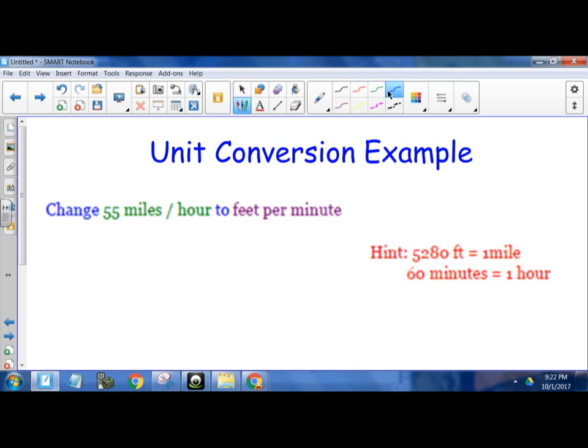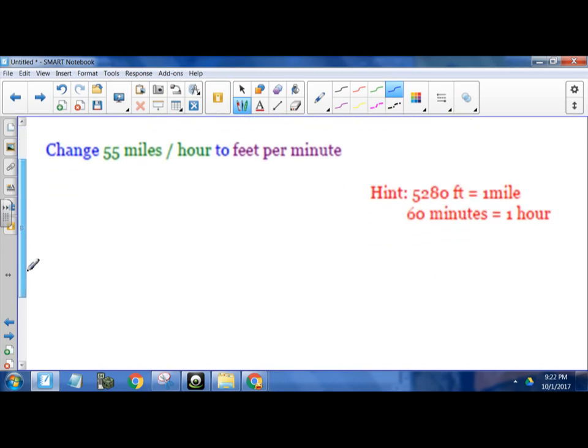So let's try. The first step is to always set up the problem as a ratio. So 55 miles over 1 hour. So we have to change two things here. We have to change miles to feet and we have to change hours to minutes. So we have what we call a double conversion here. So you pick one and start with that.